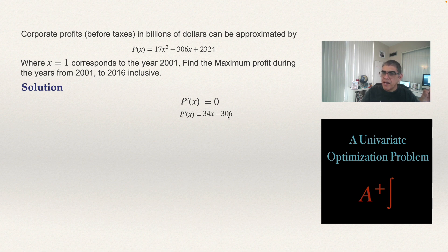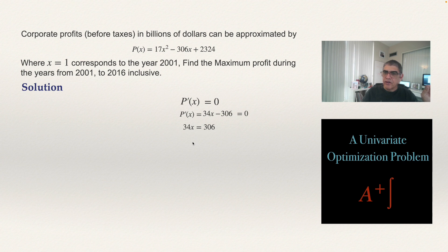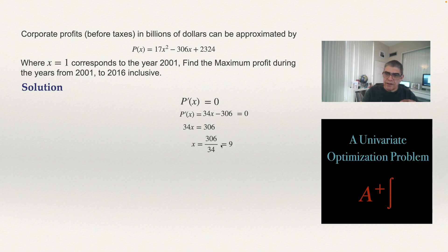Setting the derivative equal to zero gives 34x - 306 = 0, so 34x = 306. Dividing both sides by 34 gives x = 306/34. Using a calculator, this equals 9. So x = 9 is our critical value.